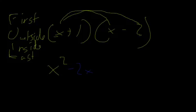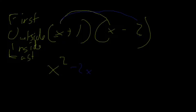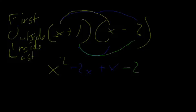Color-coding makes it easier. The Outside term gives -2x. Next, the Inside terms are +1 and x, which gives +x. The Last terms are +1 times -2 which gives -2. Now we collect the like terms: the blue x terms combine to give -x, so our final answer is x² - x - 2.